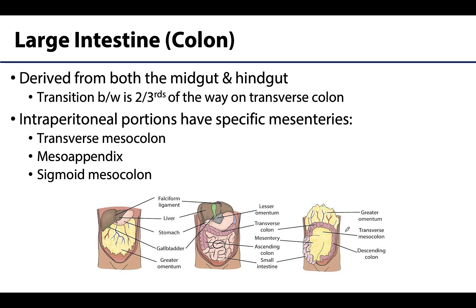The large intestine is derived from both the midgut and the hindgut — the transition point is about two-thirds of the way along the transverse colon. Intraperitoneal portions of the colon have specific mesenteries, such as the transverse mesocolon, the mesoappendix, and the sigmoid mesocolon for the intraperitoneal sigmoid colon.